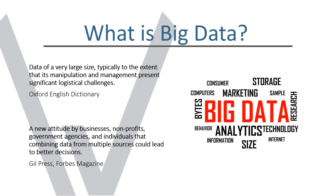We want to start off the introduction by talking about big data — certainly a buzzword you've heard a lot over the last eight years or so. It's made it into the Oxford English Dictionary, defined as data of a very large size, typically to the extent that its manipulation and management present significant logistical challenges. The business-oriented definition from Forbes: a new attitude by businesses, nonprofits, government, and individuals, that combining data from multiple sources could lead to better decisions. In data science, we talk about the five Vs of big data: velocity, volume, value, variety, and veracity.